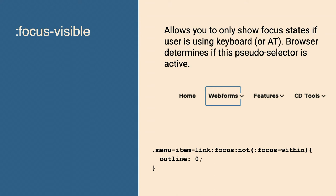Focus-visible is a selector that allows the browser to determine if the focus ring should be shown. The browser will sense if you're tabbing around, using a screen reader, or using a keyboard. If you're using a mouse, focus-visible will not activate. But if you're using a keyboard, it will. This enables you to only show focus outlines when a user is using their keyboard. We are not using focus-visible in Drupal Core — the determination was made by accessibility maintainers that it's not quite ready.